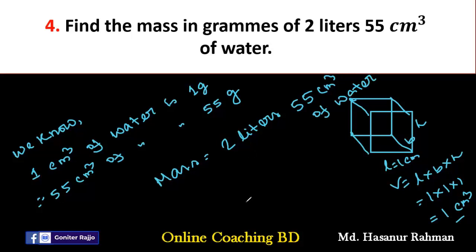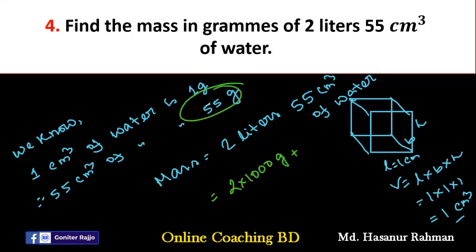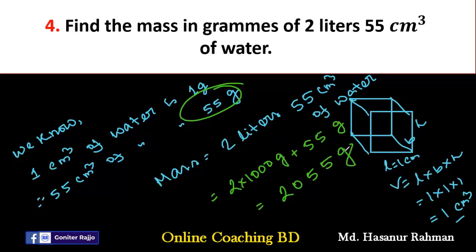Two liters means two multiplied by one thousand grams, since one liter equals one thousand grams. And 55 centimeter cube of water is 55 grams. So, two multiplied by one thousand plus 55 gives us two thousand plus 55, that is 2055 grams — the final answer for number four.